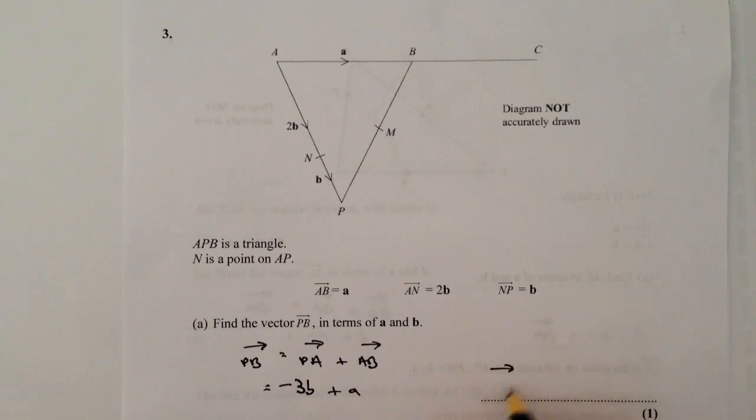So vector PB equals minus 3B plus A. Or if you prefer, you can write it a different way, which would be equal to A minus 3B. It probably does look a little bit neater when it's written like that. I hope that's okay for you.